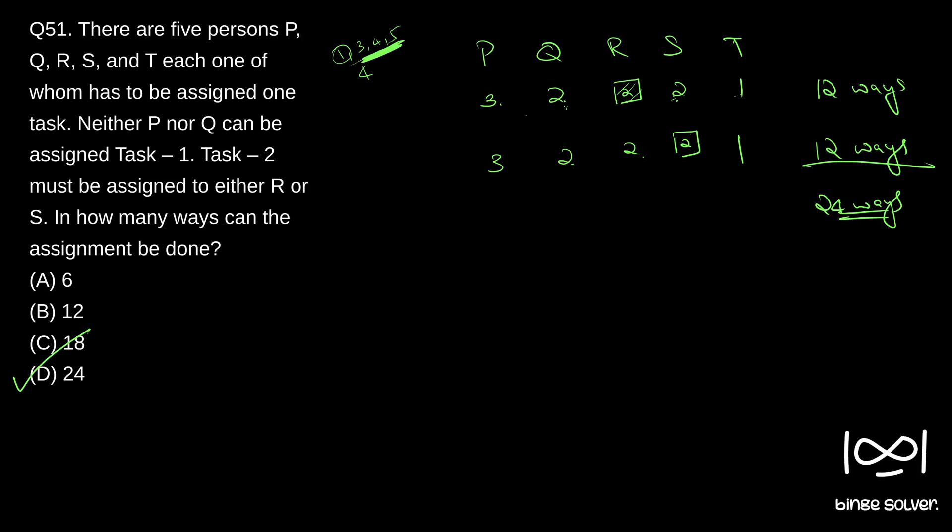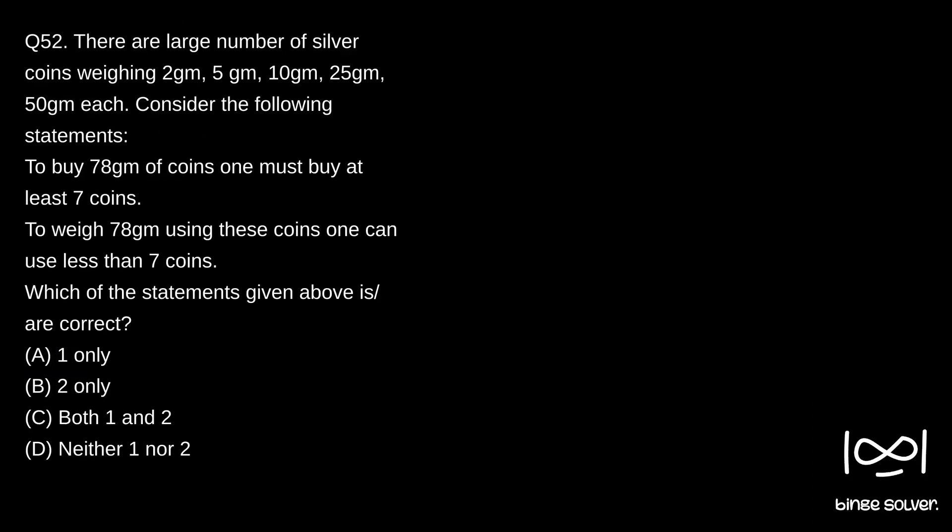Next question, Question 52. There are large number of silver coins weighing 2 gram, 5 gram, 10 gram, 25 gram, 50 gram each. Consider the following statements: To buy 78 grams of coins one must buy at least seven coins. Statement two is to weigh 78 grams using these coins one can use less than seven coins. Which of the statements given above is or are correct?